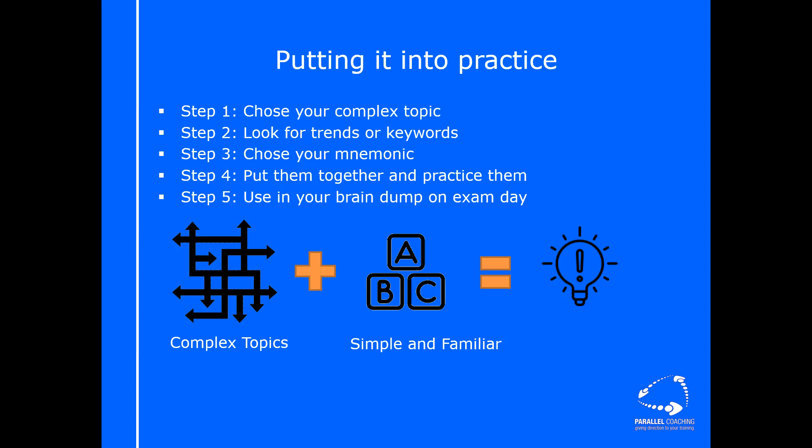Then all you need to do in step three is to choose your mnemonic. You might have alliteration, acronyms, and then how do you put those together is step four. So you start to put them together into something that makes sense for you, your alliteration, your acronym, your diagram, whatever it is that now simplifies and is in a fairly familiar format for you. Then you just need to practice them. Practice them so it becomes really easy to doodle down that drawing or to write out that acronym.